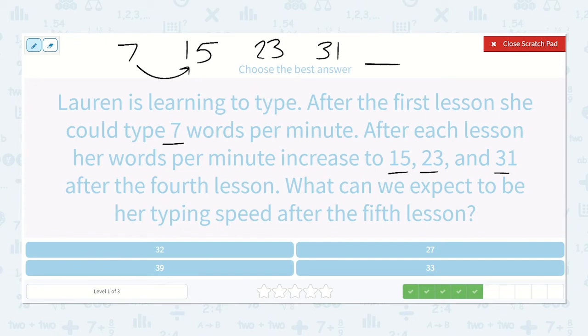So 7 to 15, well, I know 7 plus 7 is 14, so 7 plus 8 is 15. 15 plus something is 23. 15 plus 8 is 23. 23 plus 8 is 31, so I know that that will be plus 8 as well. All of these, we've been adding 8, so I know that I will add 8 for the next one as well. 31 plus 8 is 39.